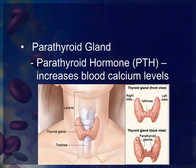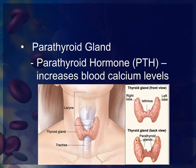The parathyroid gland has the opposite effect to calcitonin. The parathyroid gland produces parathyroid hormone, and its job is to increase blood calcium levels. When muscles and nerves require calcium to work properly and there isn't enough in the blood, cells called osteoclasts will break down bone where calcium is stored and release it back into the blood to be utilized by the muscles and nerves.